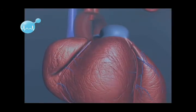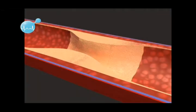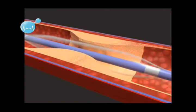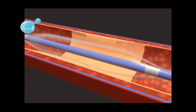A balloon catheter is guided to the site of the blockage over a guide wire in the coronary artery. The balloon is then inflated and deflated until the blocked artery opens.